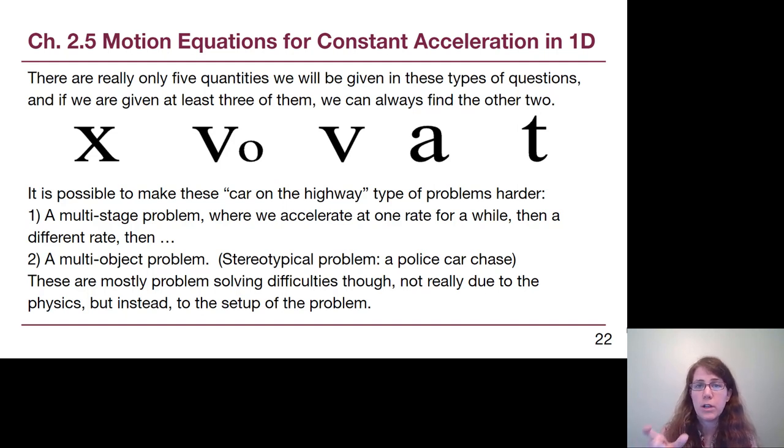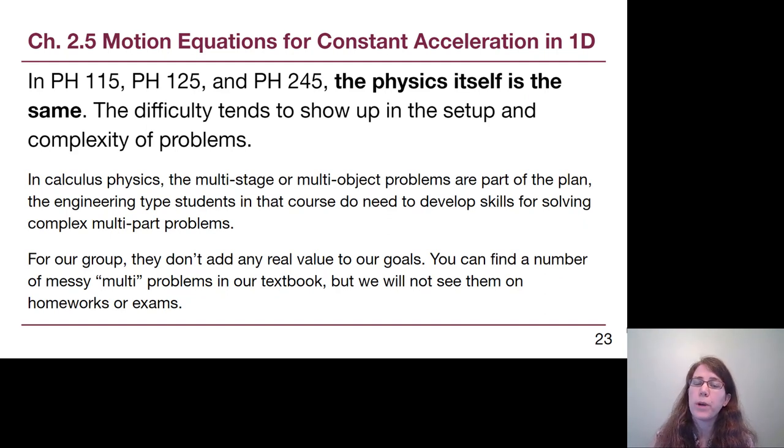So for example, if we have an acceleration of one number for a while and then we speed up or slow down for a different while, then there's a lot of keeping track of you have to solve for that middle point and it's a whole bunch of more complicated, messier mathematics without adding any additional physics understanding. Another common idea is a multi-object problem. If two cars are driving at different rates but accelerating at different speeds, there's a lot to keep track of without actually adding more to our physics understanding.